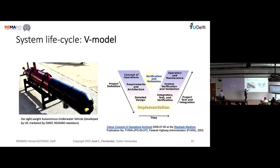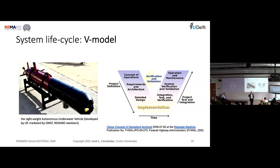In systems engineering, we use what we call the V model. The left side of the V is product definition, and the right side is product integration, verification, and validation. Validation is 'do the right thing' — meet requirements. Verification is 'do the thing right' — follow the engineering process correctly. Both are very important in industry.